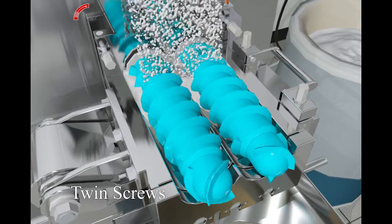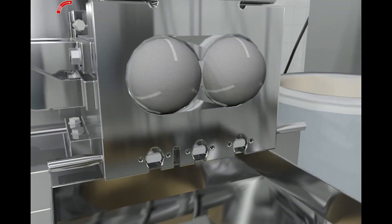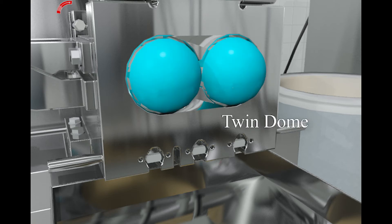Twin screws transport the wet mix to the extrusion zone where it is wiped through the screen of the dome die to produce well-formed, cylindrically extruded material of a controlled diameter.